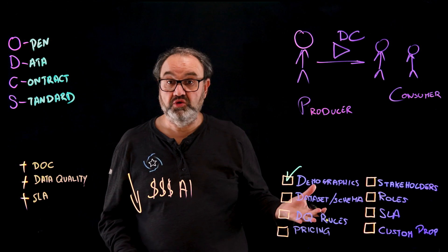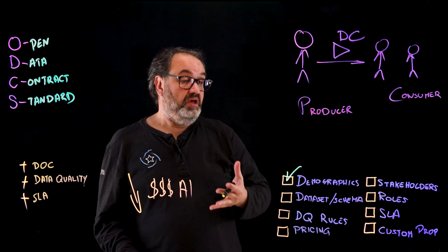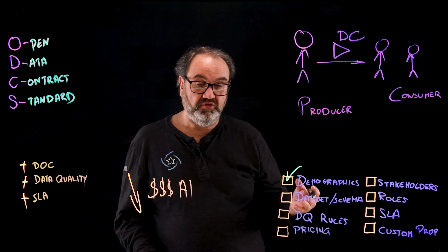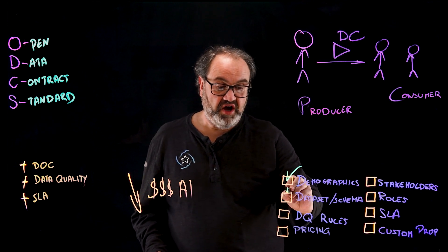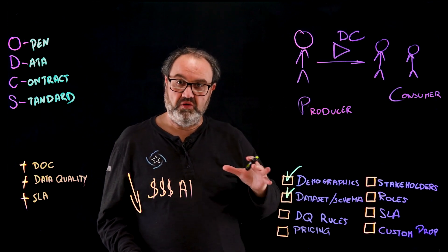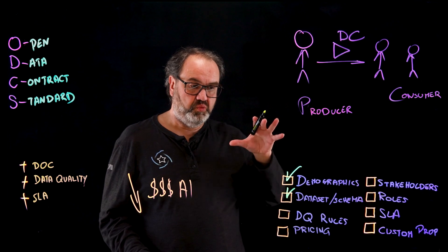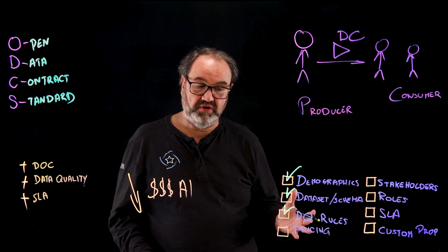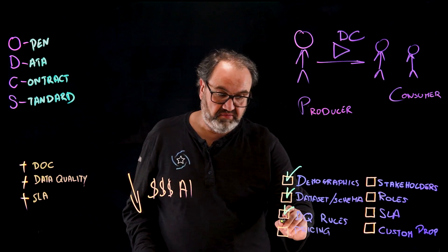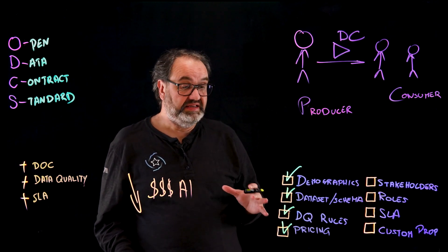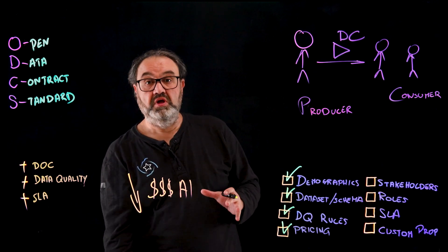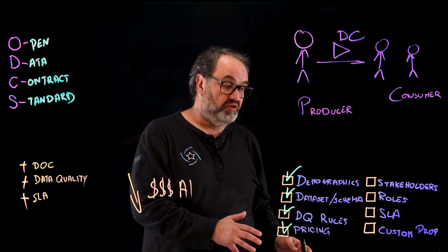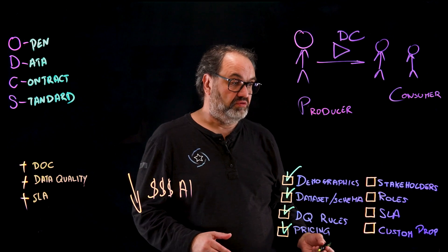Demographics, which is really your name, version, and detailed information about your data contract. Then you've got your dataset and schema, representing what the data is about, associated with your data quality rules. You've got the pricing section, which is currently experimental, but if you want to share your data within or outside your organization, you can specify rules.